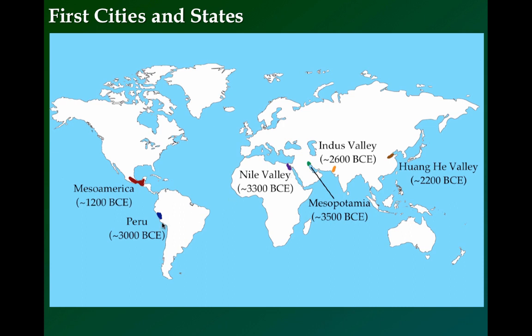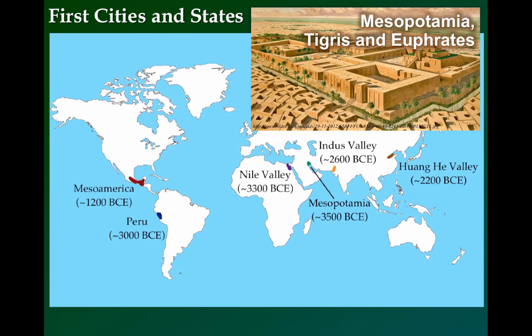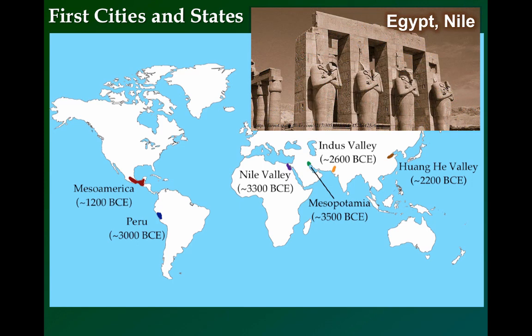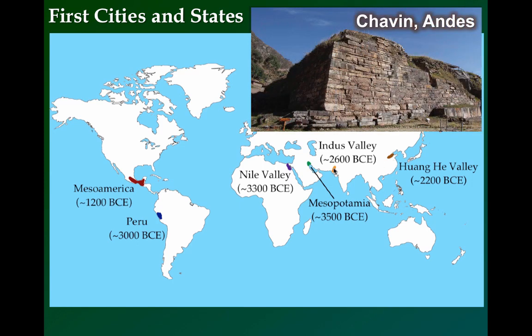Beginning around 3000 BCE, one of the oldest civilizations developed between the central coast of modern-day Peru and the Andes Mountains. Somewhat later, around 2600 BCE, a civilization sprung up adjacent to the Indus River Valley of modern-day Pakistan and South Asia. Around 2200 BCE and along the Huanghe River Valley of East Asia were the Chinese.